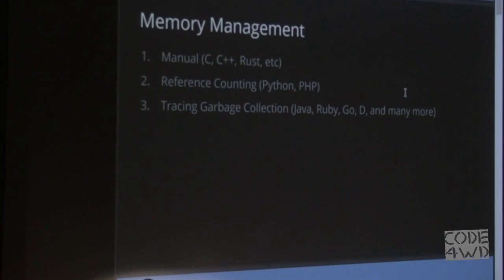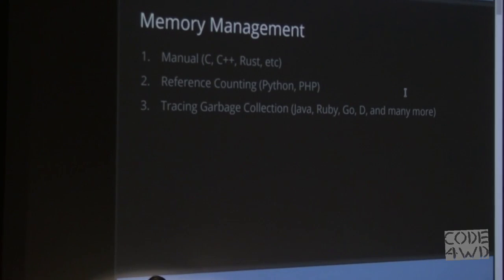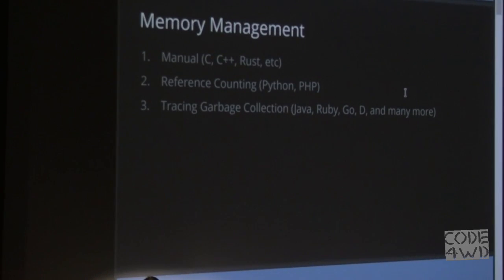The third one, which is the one we'll be talking about today, is called tracing garbage collection. Examples are Java, Ruby, Go, and D. Basically almost any interpreted programming language uses it to a certain extent. It's next to manual memory management by far the most popular technique.